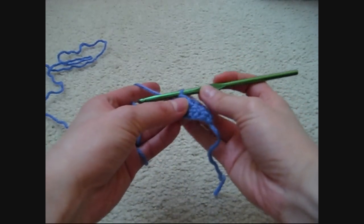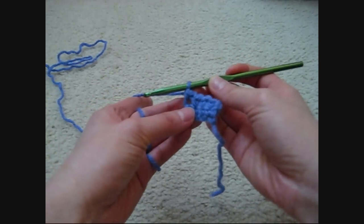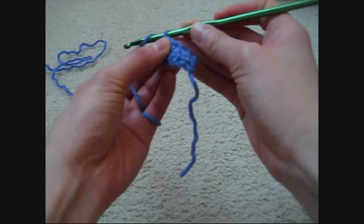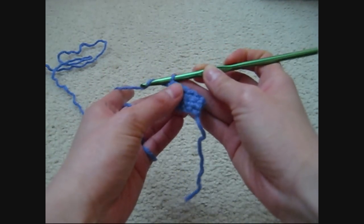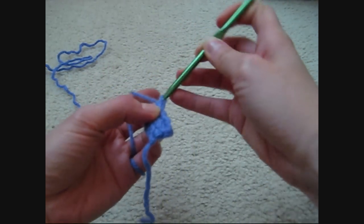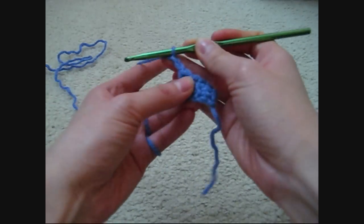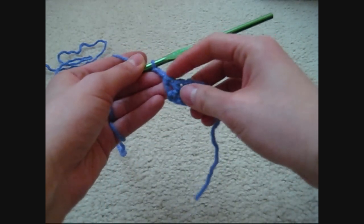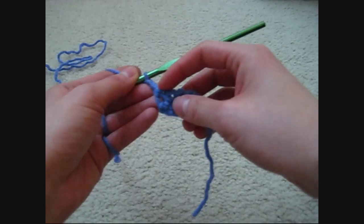For the half double crochet, you have to chain 2 after this row—1, 2. This is actually called the turning chain.